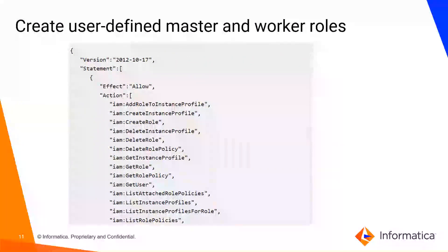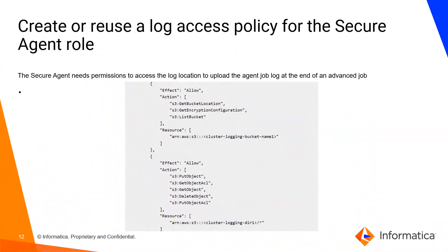Next, if you want to define your own roles for master nodes and worker nodes, you can set it up. However, for a quick setup to quickly onboard your AWS Advanced Managed Cluster, you can validate that these permissions are present in your cluster operator role — please refer to the complete documentation to check these permissions. Next, create a log access policy for your secure agent. The secure agent needs permission to access the log location to upload the agent job log at the end of an advanced job. Create a log access policy and attach it to the agent role. So we have attached a few policies to the agent role: the Assume Role Agent Policy and the Log Access Agent Policy.